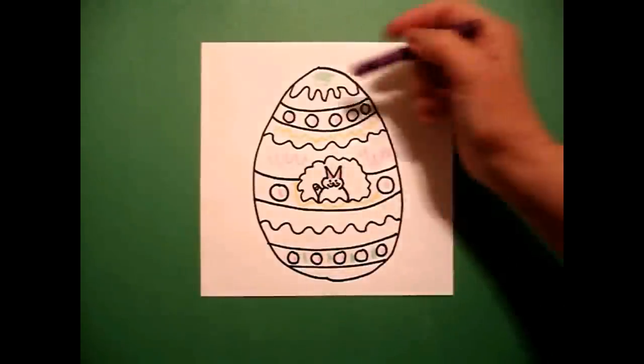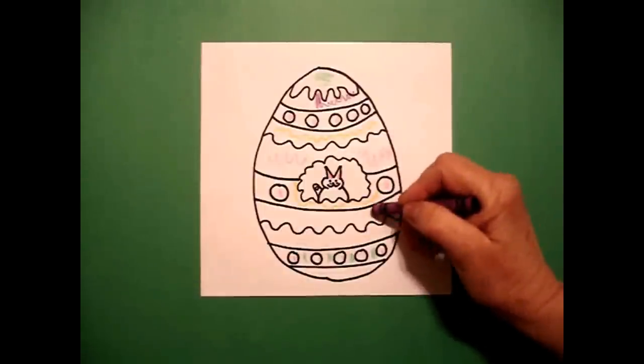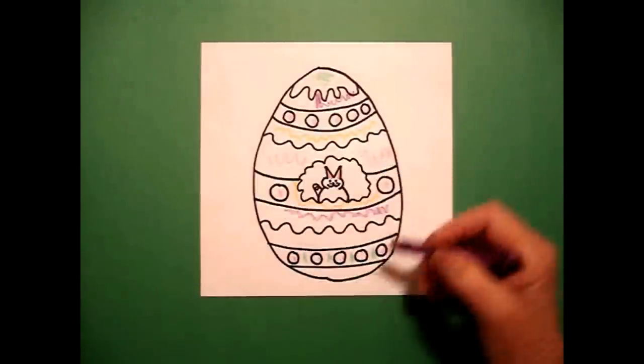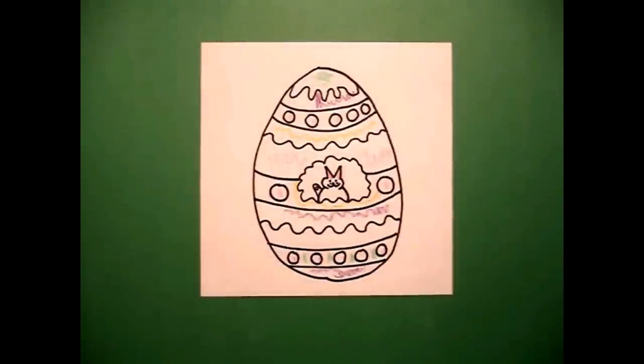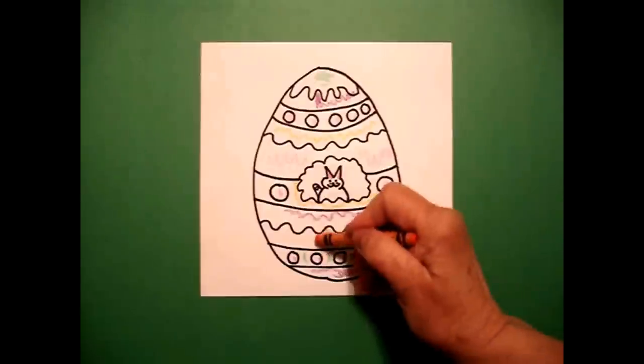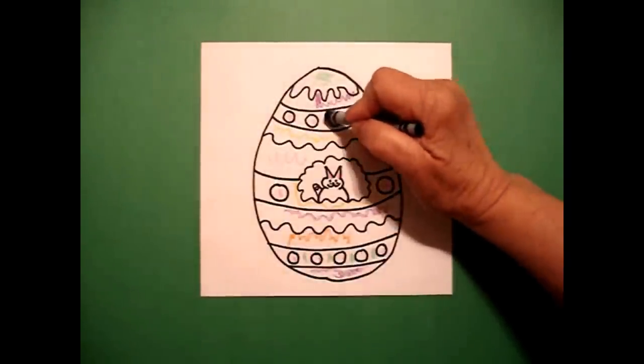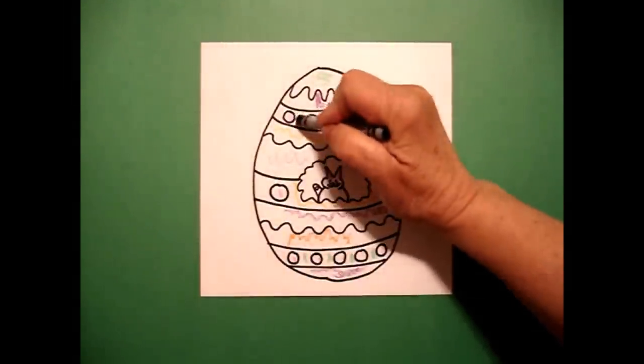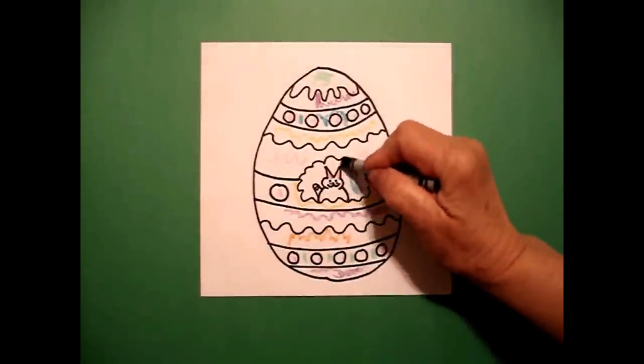I'm going to use purple on the top, in the middle, and at the bottom. And that kind of unifies my egg. I'm going to come in and do orange on this wavy line. And I'm going to use blue green to go around these baby circles and to fill in the background around my bunny.